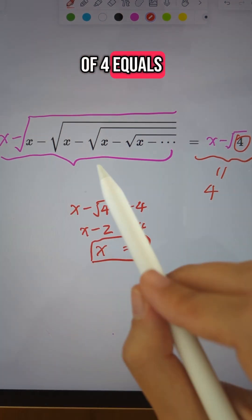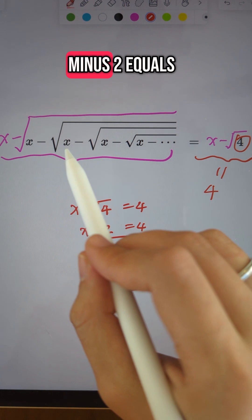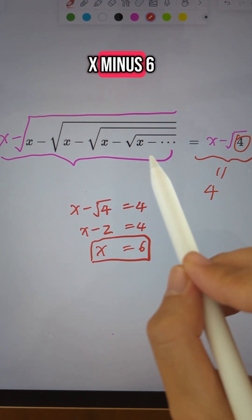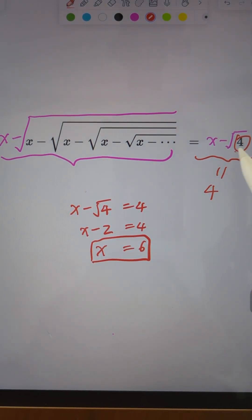Believe it or not, if you use a calculator to do 6 minus square root of 6 minus dot dot dot, you will get closer and closer to 4.